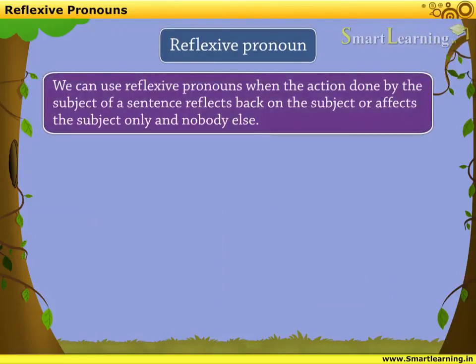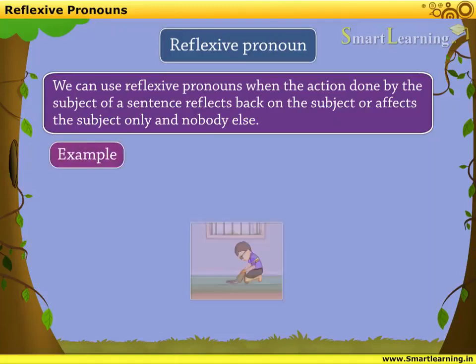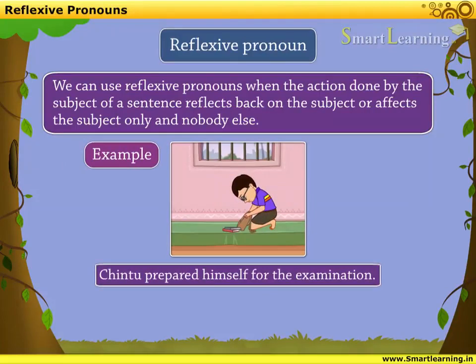Note that we can use reflexive pronouns when the action done by the subject of a sentence reflects back on the subject or affects the subject only and nobody else. For example: Chintu prepared himself for the examination. In this example, the subject is Chintu and the action is 'prepared.' This action reflected back or affected Chintu only and nobody else. So, we have used the reflexive pronoun 'himself.'